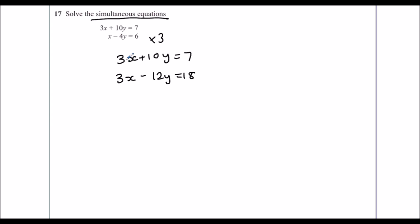Now I need to get rid of the x's and I'm going to eliminate them. And the way to eliminate them is 3x take away 3x is nothing. So I'm going to take away every term in the two equations. So 3x take away 3x is nothing. It's going to eliminate it. It's going to go.